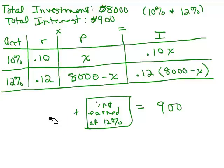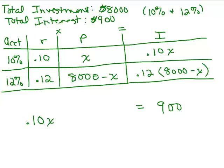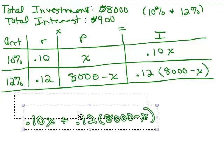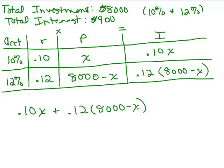So, let's write that. .10x. That was the interest earned at the 10 percent account. How much was earned in the 12 percent account? It was .12 times 8,000 minus x. Okay. So, here we have the amount earned in one account, right? Here's the interest from one account, plus the interest earned in the other account, is a total of $900. That is our equation. The interest earned at one account, plus the interest earned in the other account, equals the total interest earned. So, this is the equation we need to solve.